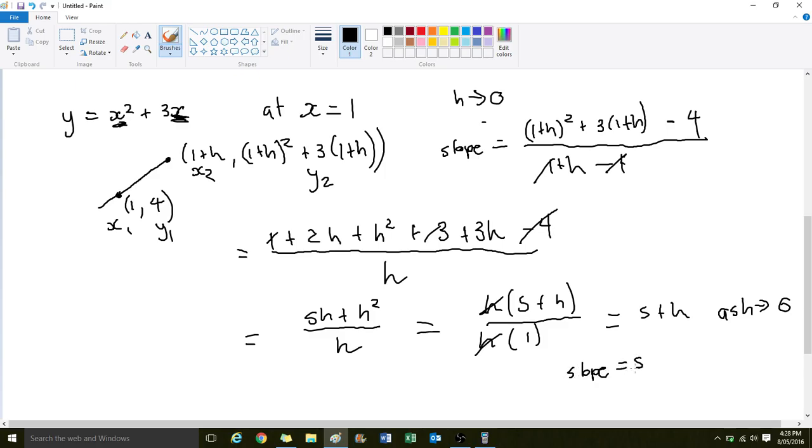So, for the function y equals x squared plus 3x, the slope at x equals 1 is 5. So this is an important skill that we need to know how to do. In the next video, we're going to look at how to do it without a set point.